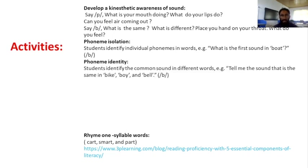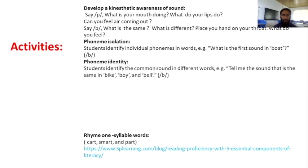The next activity is phoneme identity, where students identify the common sound in different words. For example, with three words — bike, boy, and bad — students identify the same phoneme, which is the 'b' sound. You can also vary the activity by giving them words and asking them to identify the common middle sound or common final sound.